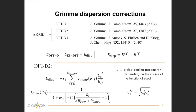In the DFT-D3 scheme, there are not only the dispersion energy terms present in DFT-D2, but also additional terms — in particular, three-body terms that take into account the interaction between three atoms at the same time. These three-body corrections are small with respect to the dominant two-body terms, but during optimization of the parameters it was found that a three-body term was really essential to get better accuracy.